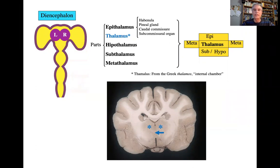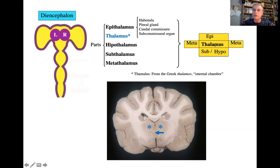Let's study the parts. The first is the diencephalon, which is formed by the epithalamus, thalamus, hypothalamus, subthalamus, and metathalamus. All parts of the diencephalon take their name according to their position relative to the thalamus — meaning 'internal chamber.' There are two thalami, one right and one left, united by the interthalamic adhesion, making it a paired structure. However, the hypothalamus is not paired.